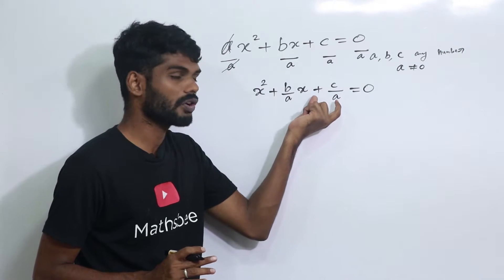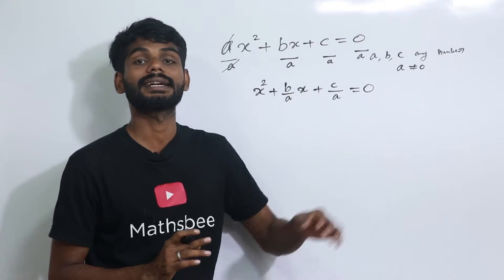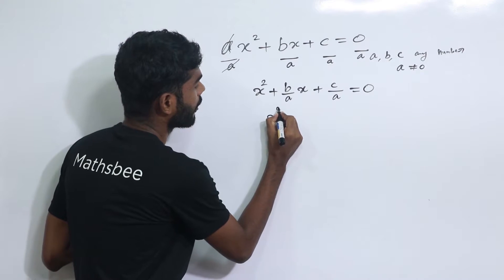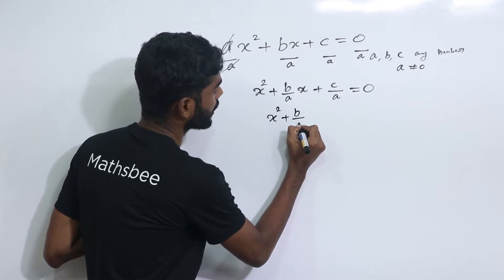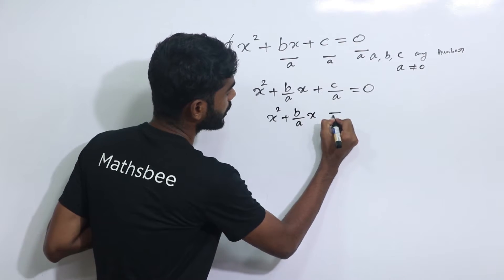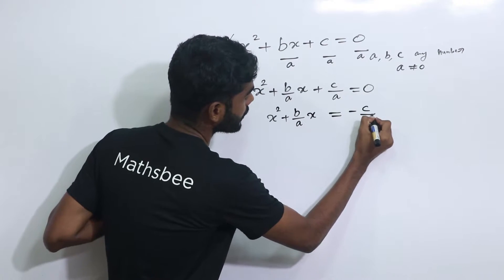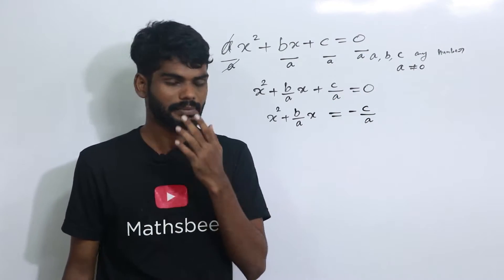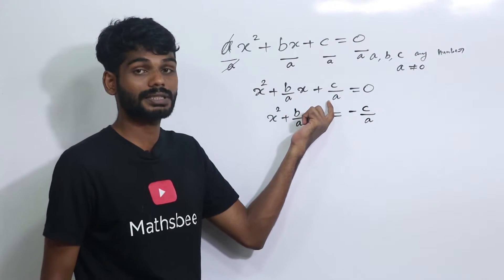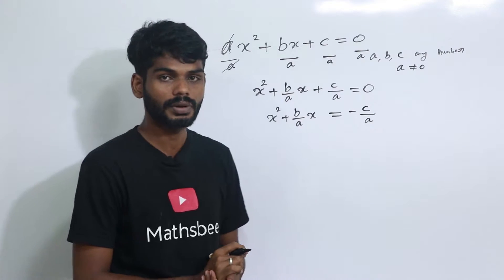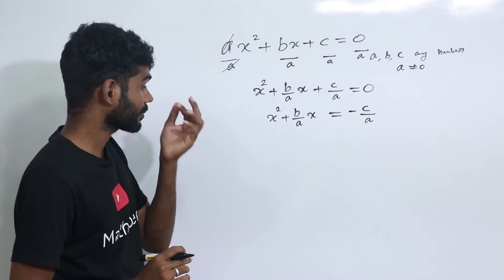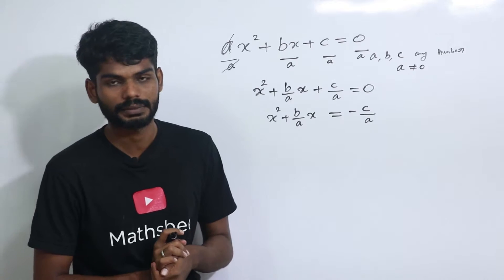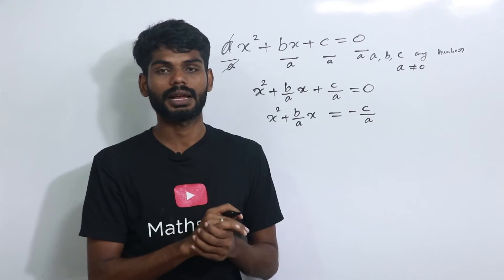We move the constant term c by a to the right hand side, so we get x squared plus b by a into x equal to minus c by a. This is the concept of completing the square.